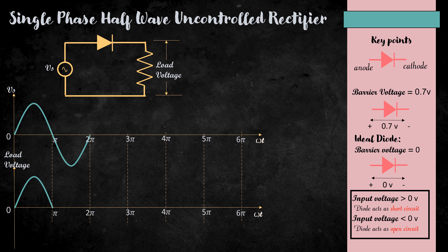Now, let's consider the input from 2π to 3π. Here, the input voltage is greater than 0. Therefore, the diode acts as a short circuit, so the load voltage will be the same as that of the supply voltage. Considering the input from 3π to 4π — here, the input voltage is less than 0. Therefore, the diode acts as an open circuit, so there is no load voltage from 3π to 4π.